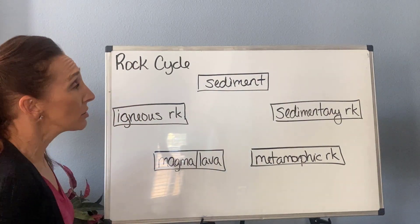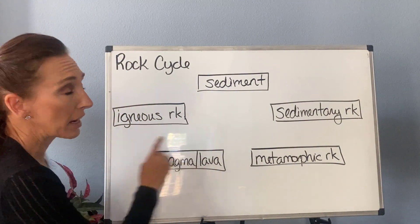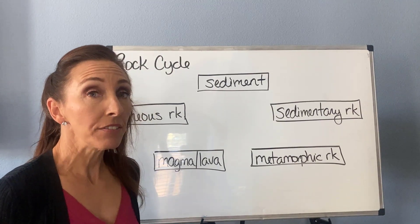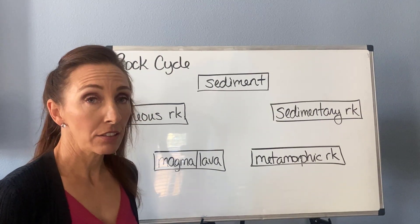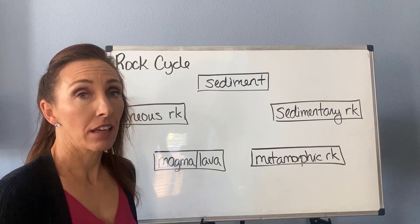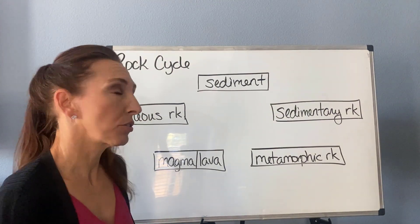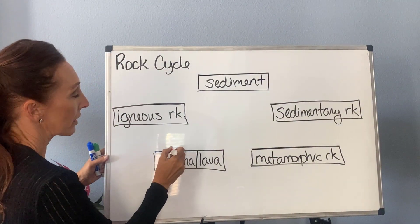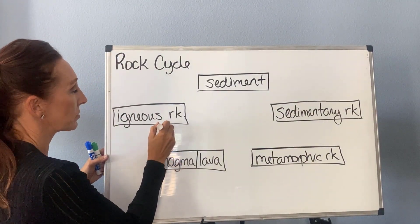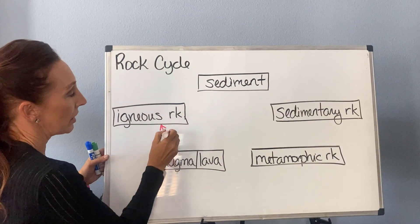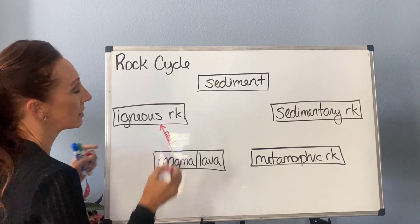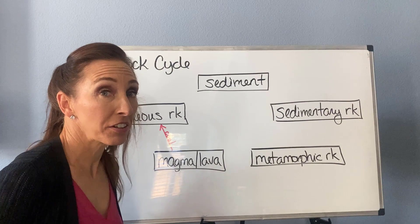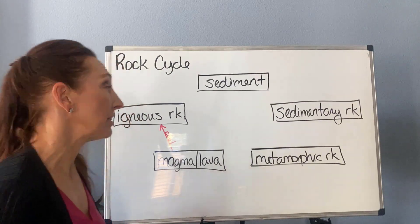Magma and lava can only do one thing — by definition, an igneous rock is made as magma or lava cools. So we draw an arrow from magma and lava to igneous rock and write the word 'cool' here. There's nothing else it can create, so that's really easy.